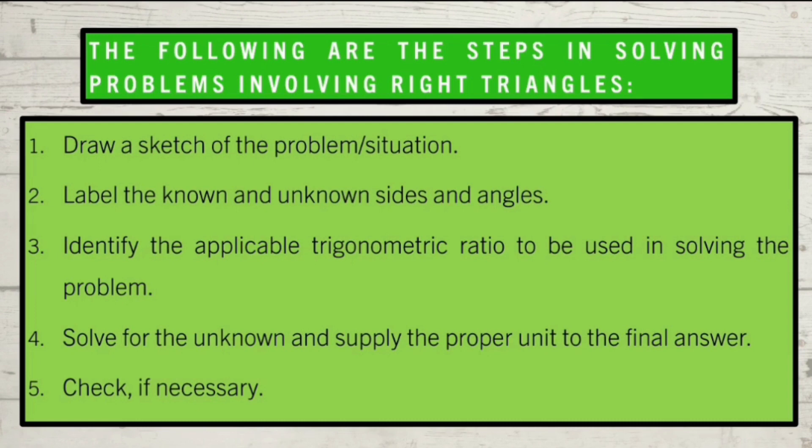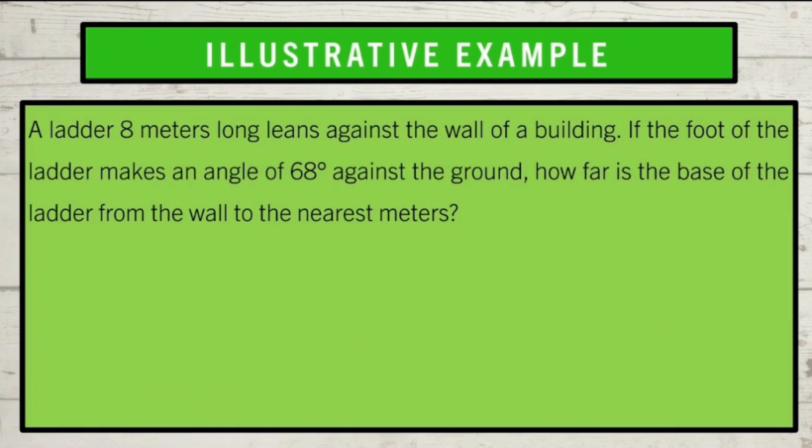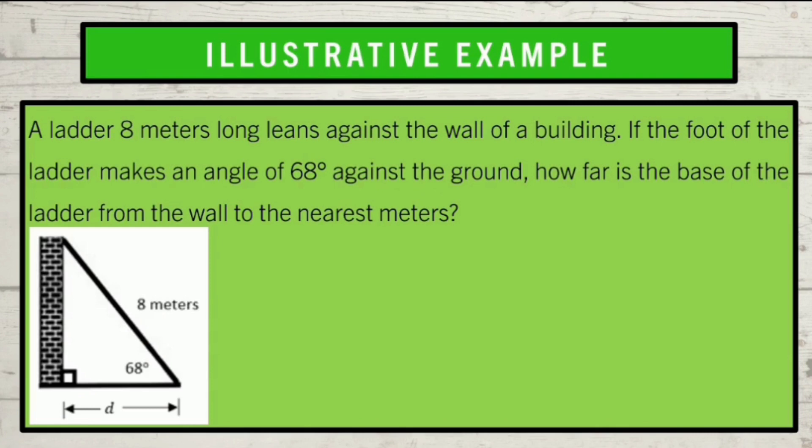Let's proceed to our first example. A ladder 8 meters long leans against the wall of a building. If the foot of the ladder makes an angle of 68 degrees against the ground, how far is the base of the ladder from the wall to the nearest meters? For the first step, it is better to illustrate the problem and determine the given and what is asked in the problem. For the given, we have 8 meters as the length of the ladder, 68 degrees as the angle made by the ladder with the ground. And what is asked is how far is the base of the ladder from the wall.